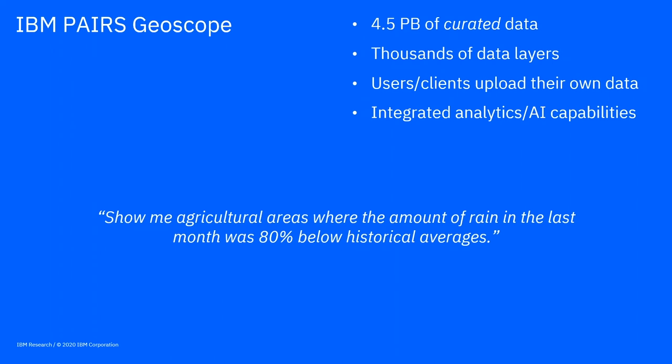For example, we can answer a question like: show me agricultural areas — that's vegetation indexes or government crop information — where the amount of rain, a meteorological data layer, in the last month is 80% below historical averages. That's a logical operation combined with averaging larger amounts of data. These kinds of questions, combining multiple data and arithmetic operations on multiple data, are possible and very fast because we don't have to move the data until we get the answer, and then we move only the final result to a local processor.